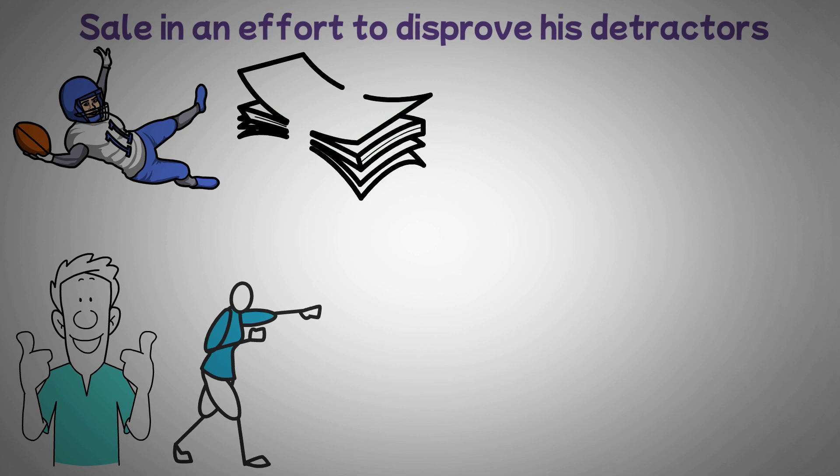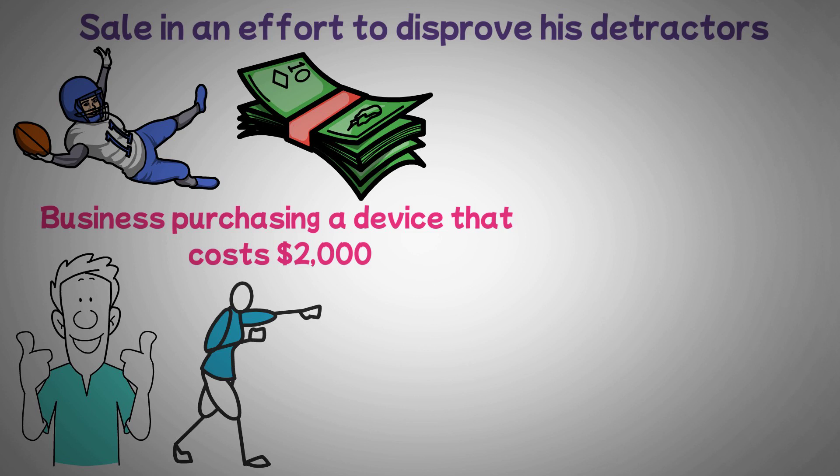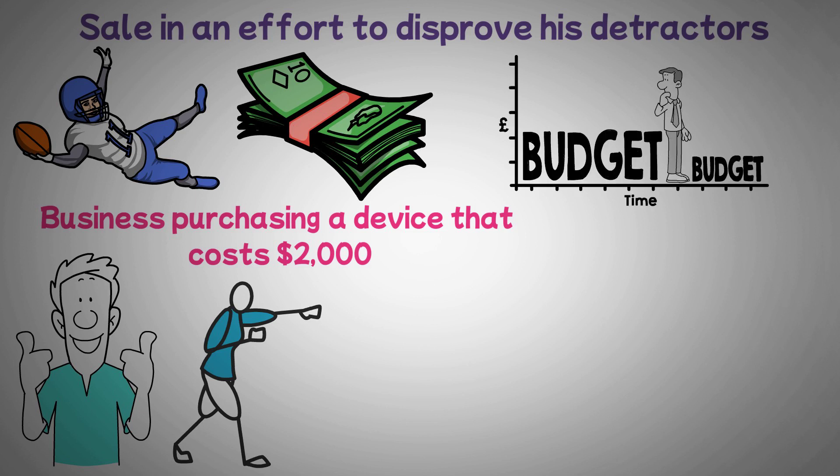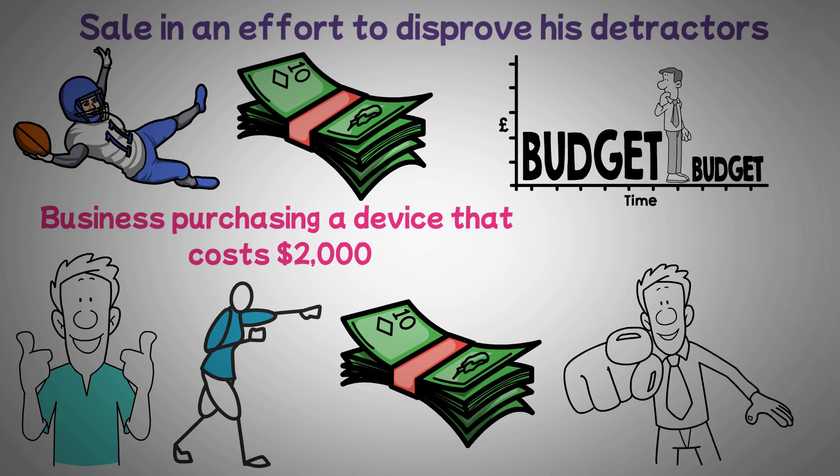There will always be someone to compete with or to brag to in life. When your monthly income is only $3,000, you have no business purchasing a device that costs $2,000. Be wise, develop a budget, and keep tabs on your spending to make sure you don't go over your allotted budget.